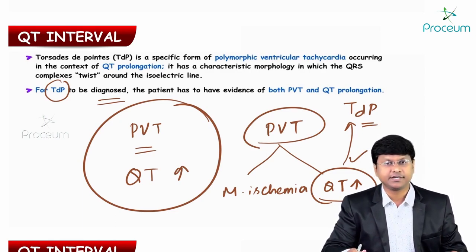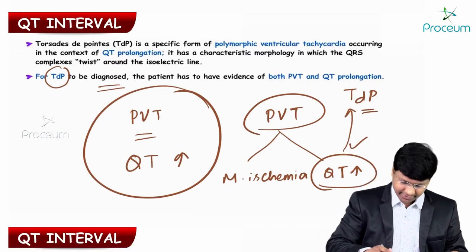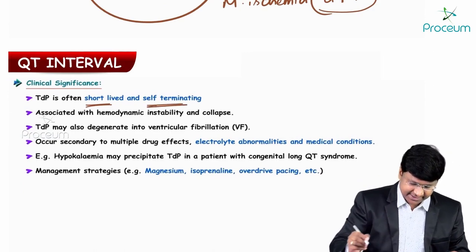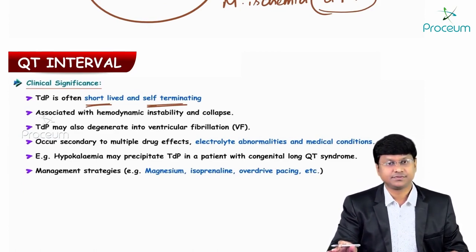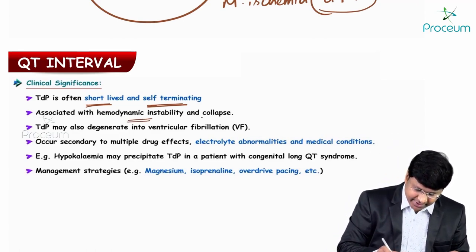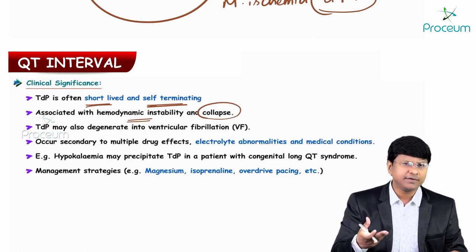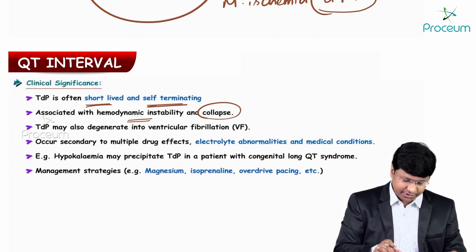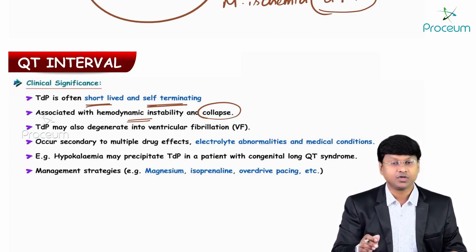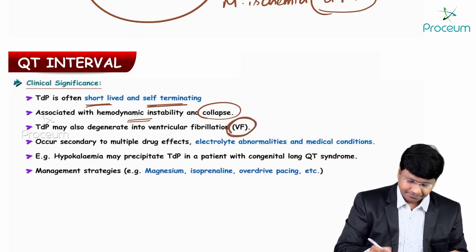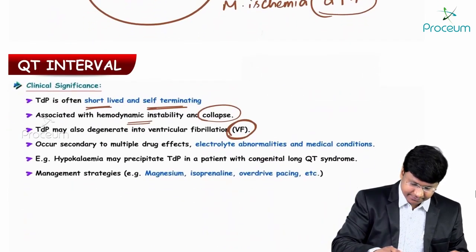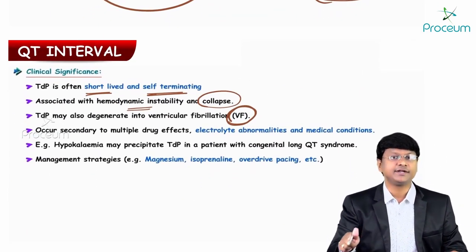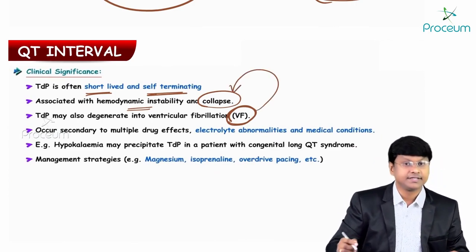What is the clinical significance of torsades de pointes? Most of the time it is short-lived and self-terminating. These patients will have hypotension and can develop cardiovascular collapse, so they are associated with hemodynamic instability. What we are most worried about is that these patients may degenerate into ventricular fibrillation, ending up in cardiovascular collapse.